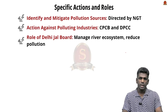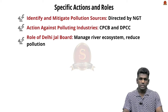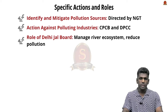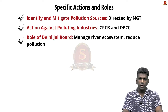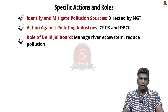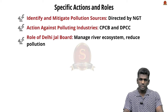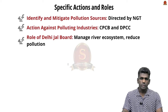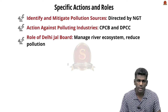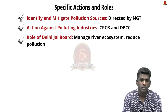The National Green Tribunal directed Delhi and Haryana governments to identify and mitigate pollution sources for the river. The Delhi Jal Board is responsible for managing the entire river ecosystem with specific attention to reducing pollution within the Delhi stretch of Yamuna. The Delhi Government also issued a six-point action plan for Yamuna cleanup, aimed at making Delhi a clean, beautiful and modern city. This plan includes expanding sewer connectivity to 100% of households under the Chief Minister Free Sewer Connection Scheme.